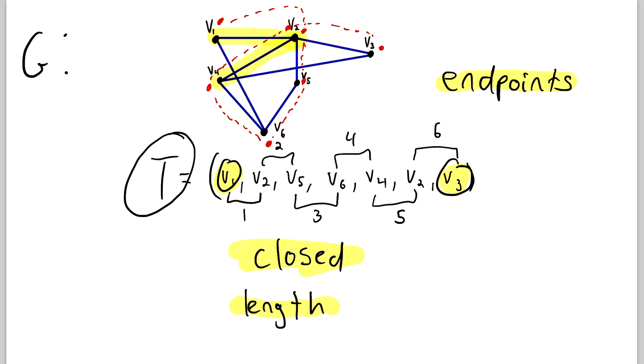And also, just the same as with walks, we can refer to this trail T as a V1, V3 trail, because it starts at V1 and ends at V3. And we can also say that every vertex and edge in the trail lies on that trail. So, for example, the edge V5, V6 lies on the trail T.